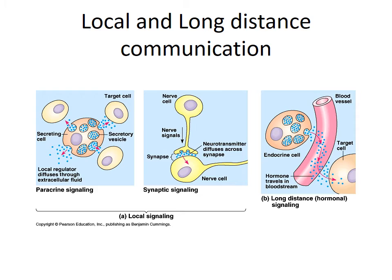Another way that cells can communicate is by using chemical messages, and these can be both local and long-distance communication. With local signaling, as you can see on the left-hand side of this diagram, a cell is secreting messages via secretory vesicles. These come from proteins made in the endoplasmic reticulum, which then travel through the Golgi apparatus and are packaged into secretory vesicles that release proteins into the local environment, where they attach to target cells to help regulate the organism.